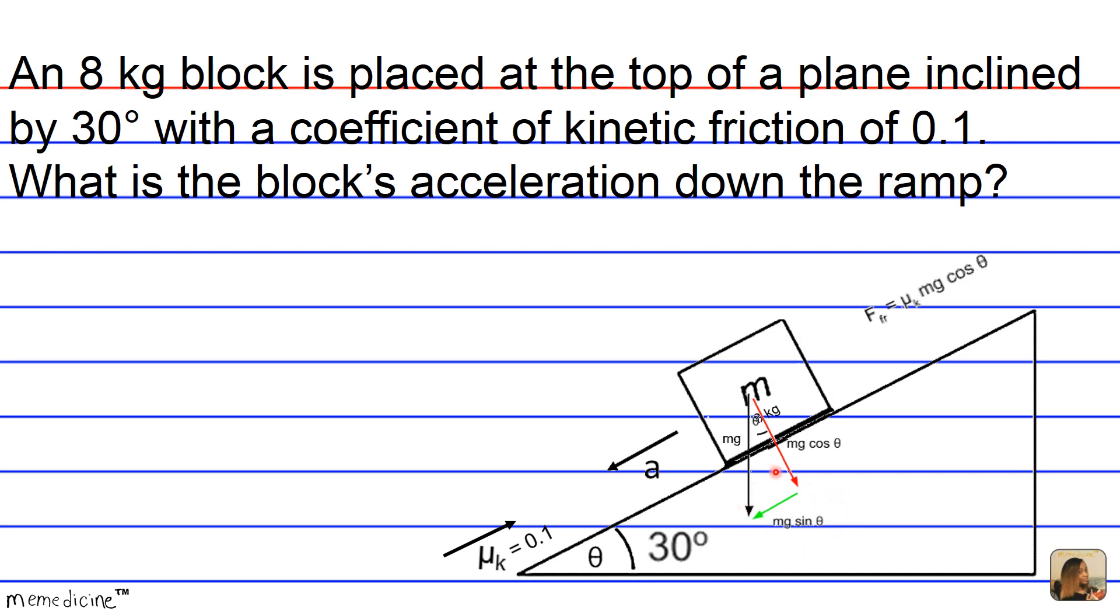And of course, you can say, this definitely can't be theta because this would be our 90 degrees, hence giving us the right triangle. There's also an invisible 90 degree square here as well.